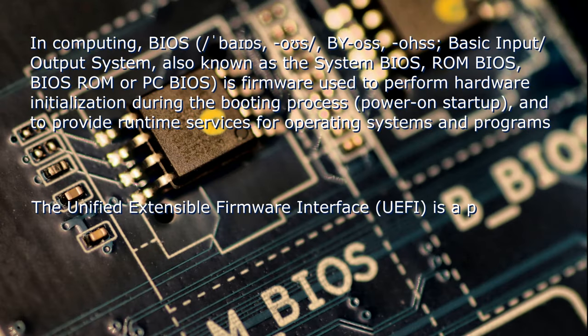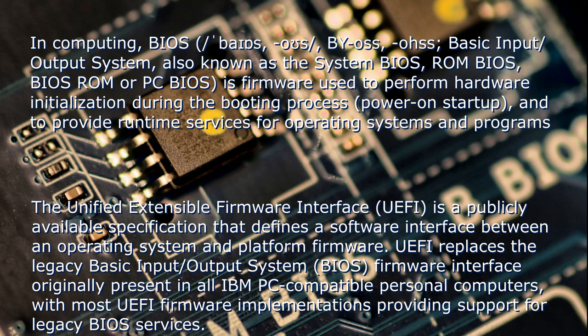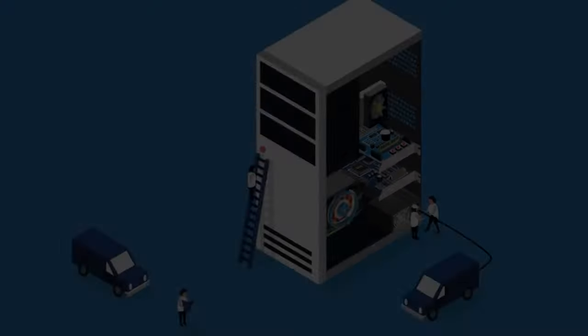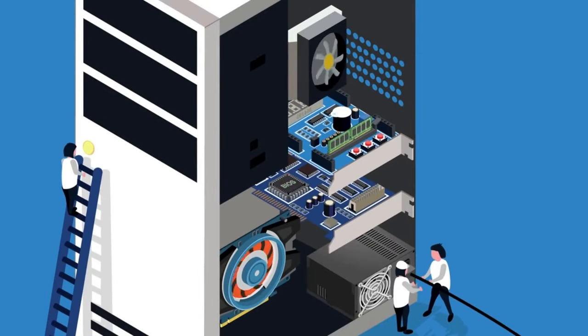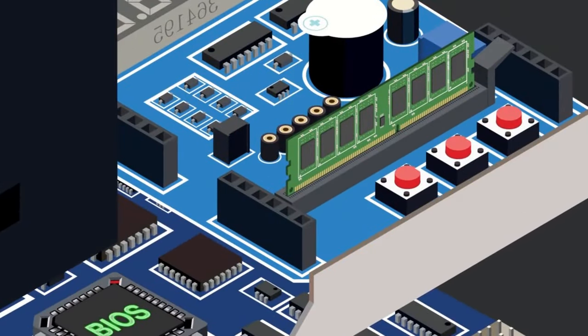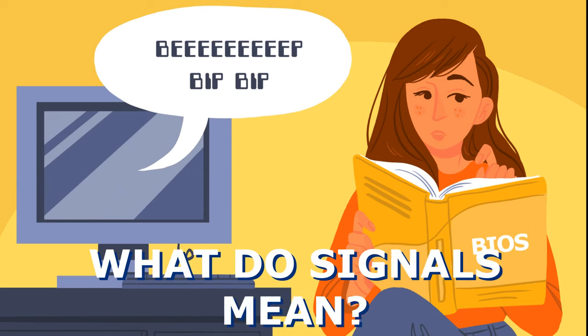Today it is already more advanced and is called UEFI. This is what connects your devices — processor, video card, etc. — and higher-level software, for example the Windows operating system. When you turn it on, the BIOS checks all the connected hardware of your computer for operability. If something important doesn't work, it gives errors, and if it cannot show them on the screen, it does this with the help of sound signals. But what do these signals mean and how to fix it? Let's find out.